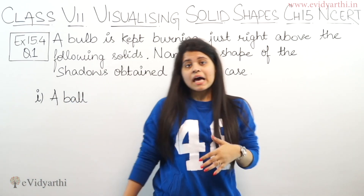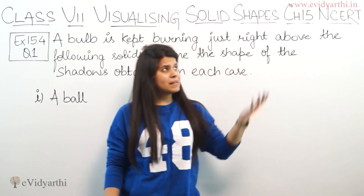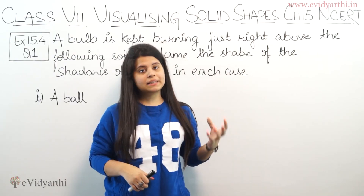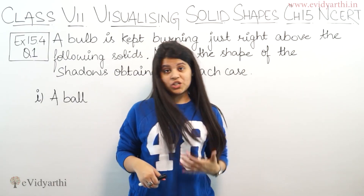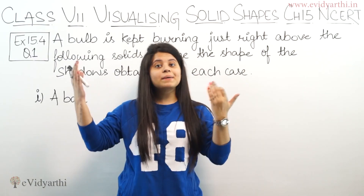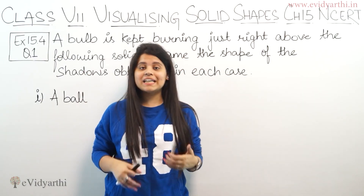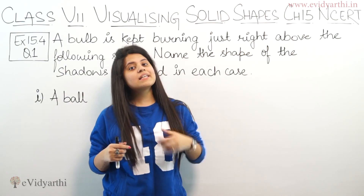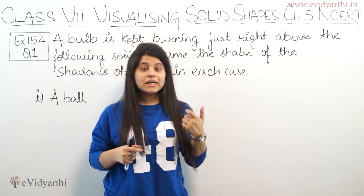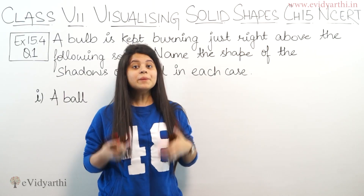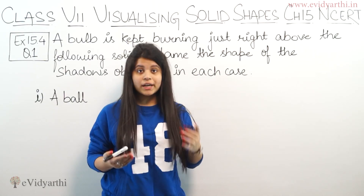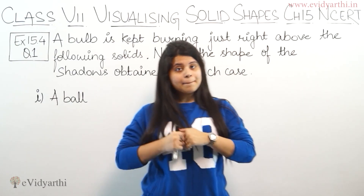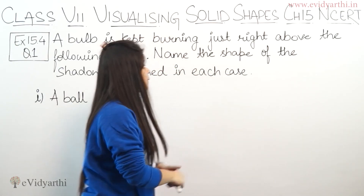Now it's very obvious — if we keep a bulb or light source above an object, or if we are in sunlight, then our shadow will appear. So any object will show us what shape of shadow it is going to form.